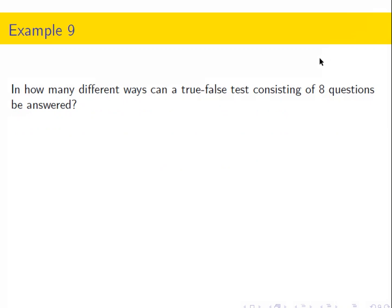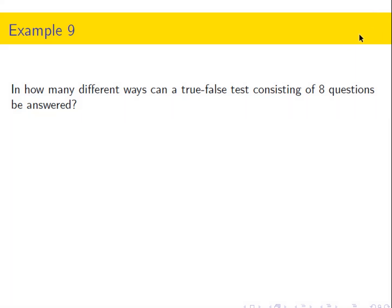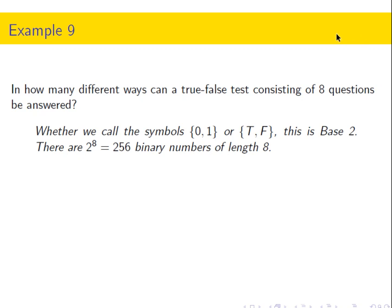In how many different ways can a true-false test consisting of eight questions be answered? Each time you're picking either true or false — we're spelling words using a two-letter alphabet. There are eight questions, so it's an eight-letter word made up of T's and F's, like binary numbers. So there are 2 to the 8th options — a Cartesian product where each of the eight sets has two elements.